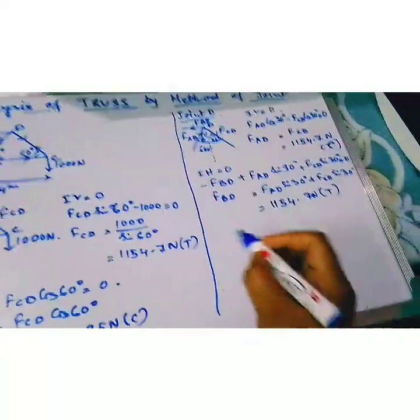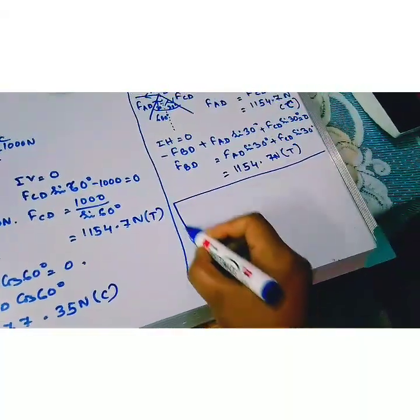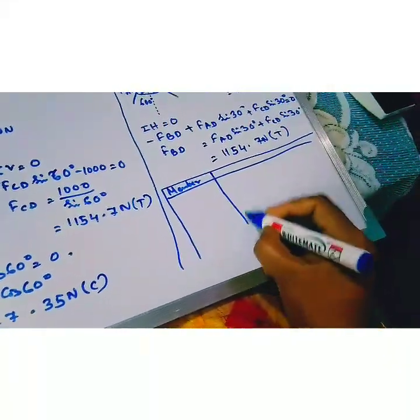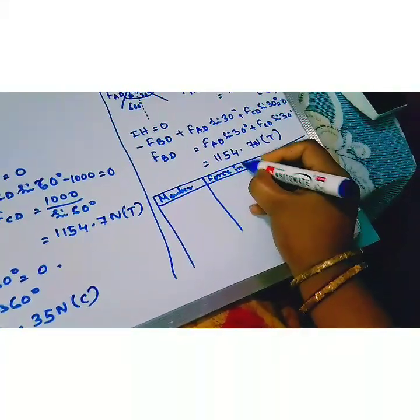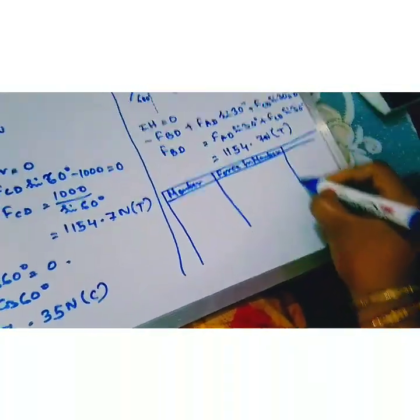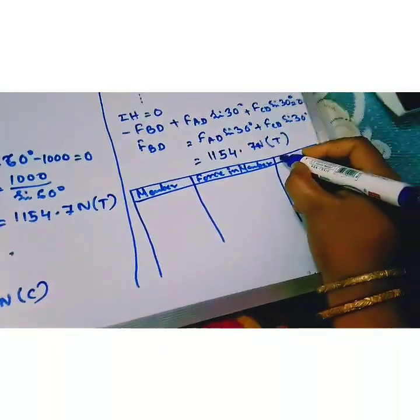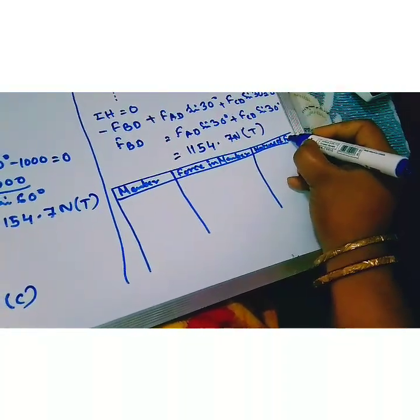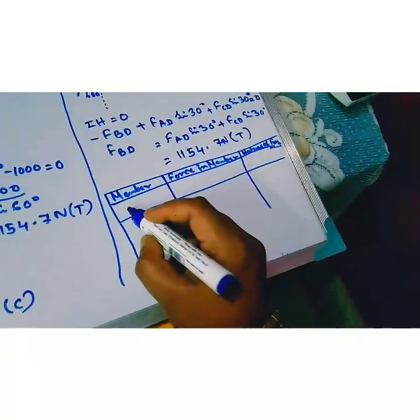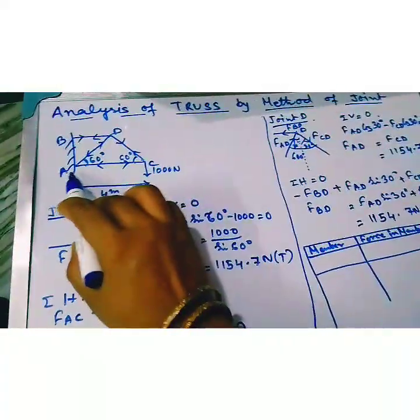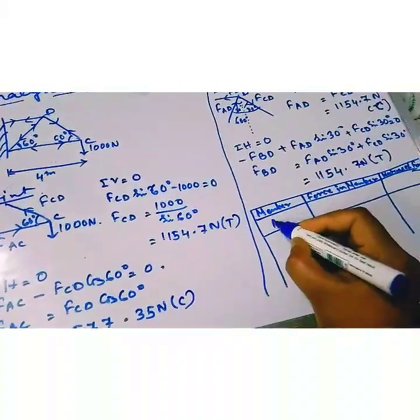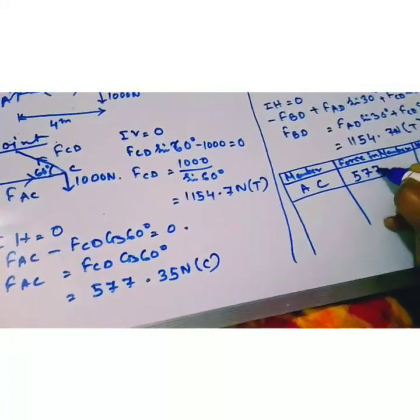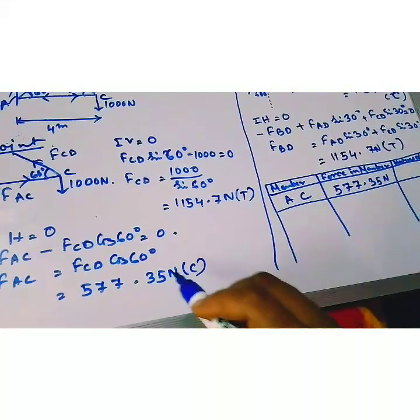Last, we make a table. That is, member, force in member and nature of force. This is member AC. The value of AC is 577.35 newton. Nature is compression.